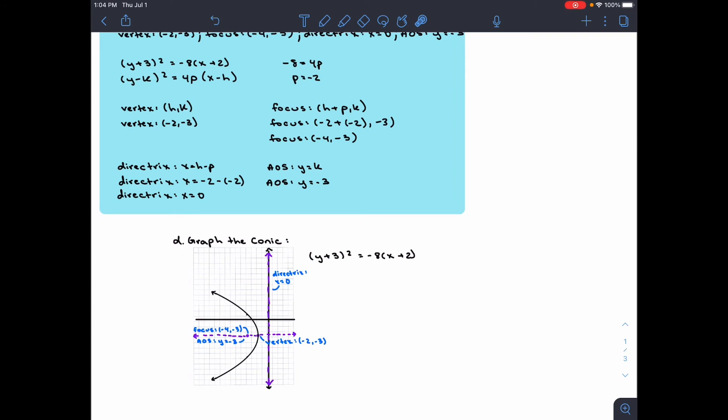The next step is to find the directrix. We know that the focus, the vertex, and the directrix have to be equal distances. We can use this equation: x = h - p. So we get x = 0. That's the directrix right here.